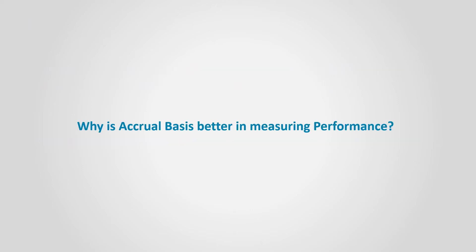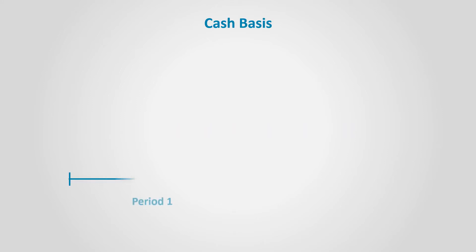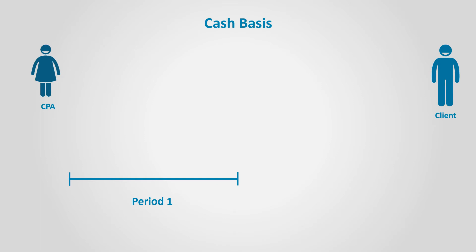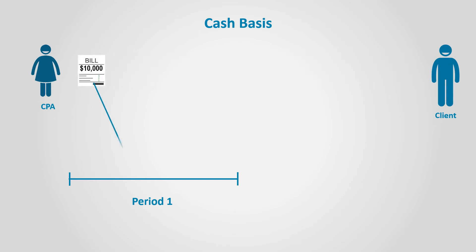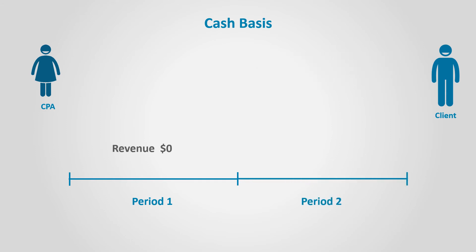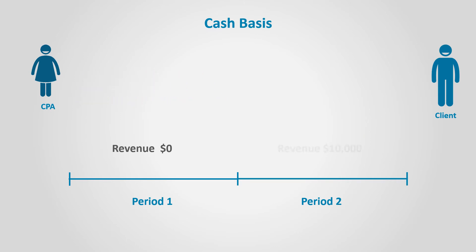Why is accrual basis better in measuring performance? Let's assume that a CPA provided a consulting service for a client in period 1 for $10,000. The CPA sent a bill to the client after providing the services. However, the client paid the amount in period 2. According to cash basis accounting, period 1 revenue is $0, since no cash is collected. Meanwhile, revenue is recognized in period 2, when the cash is collected.